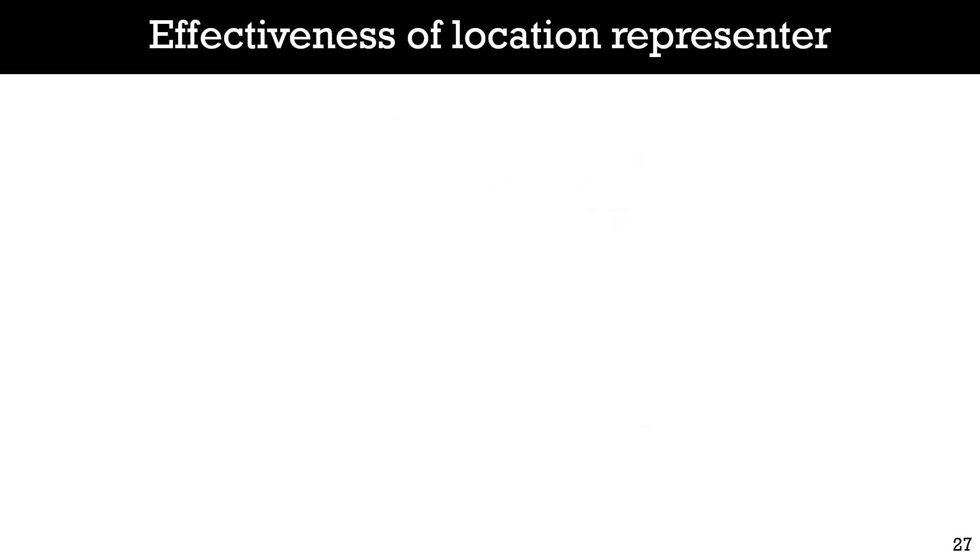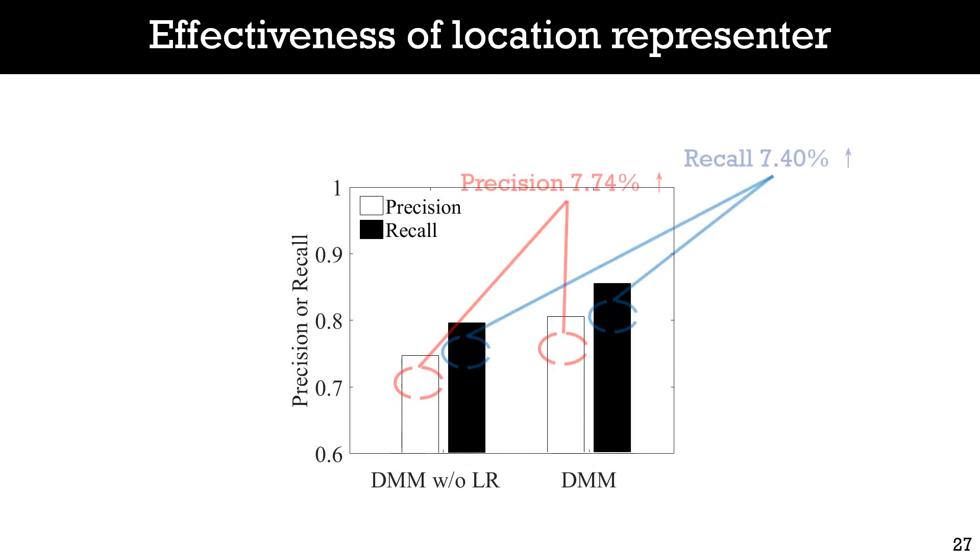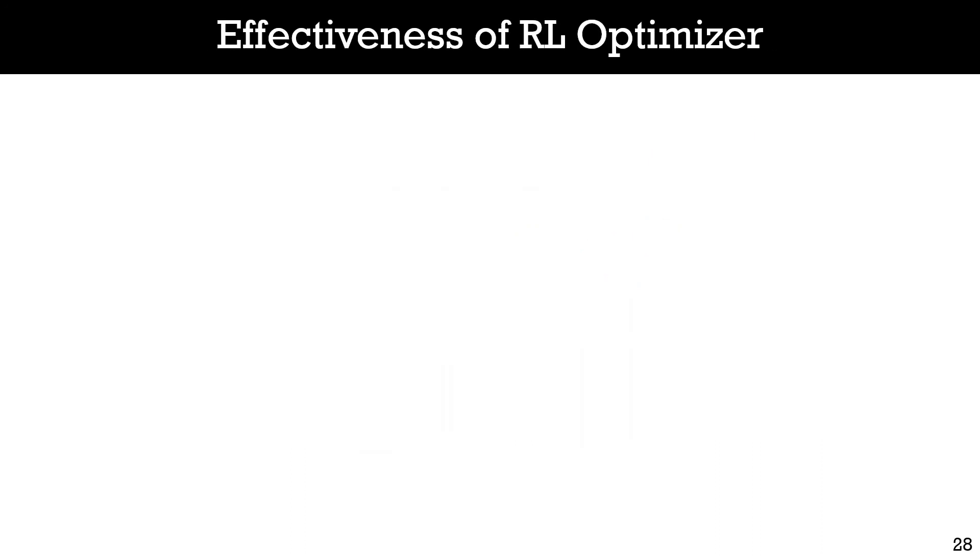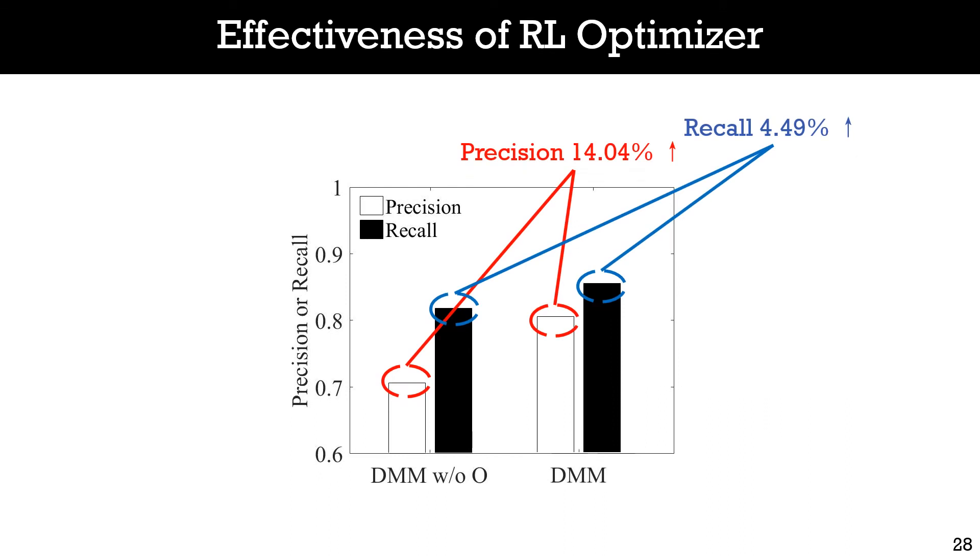We further decompose the performance of location representers and reinforcement learning optimizer respectively. We first implement a variant of our system which simply uses binary vectors to represent cell towers. As we can see, the system with location representers performs better. This indicates that the map matching pattern can be generalized to surrounding cell towers. We then study the performance of reinforcement learning optimizer on accuracy. We implement our system with and without reinforcement learning optimizer. We observe that the optimizer improves the accuracy of basic map matching models in precision and recall. This indicates that our system succeeded in optimizing the map matching model with heuristics we observed in real driving scenarios.